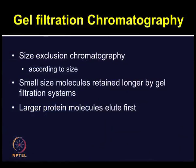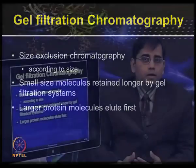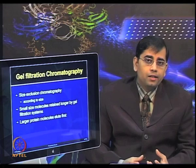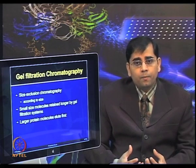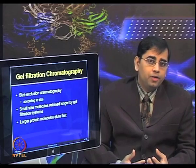Gel filtration chromatography is also known as size exclusion chromatography — molecules are separated according to size. Small molecules such as salts are retained longer by the gel filtration system, while larger molecules such as proteins elute first, because they cannot enter the porous beads and are separated based on size.